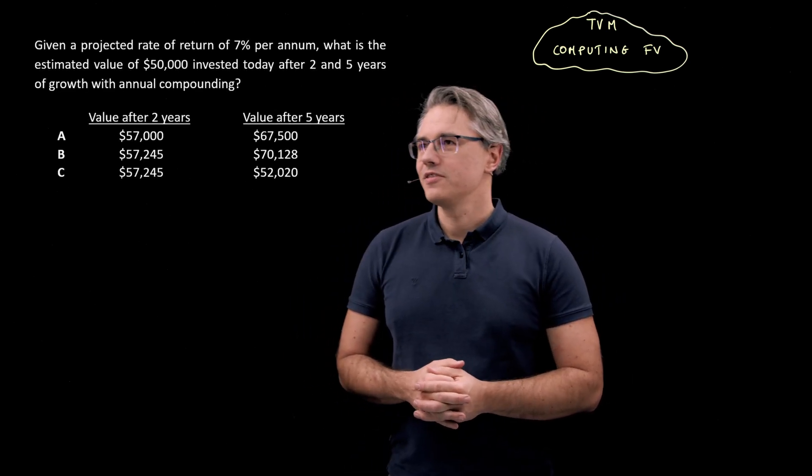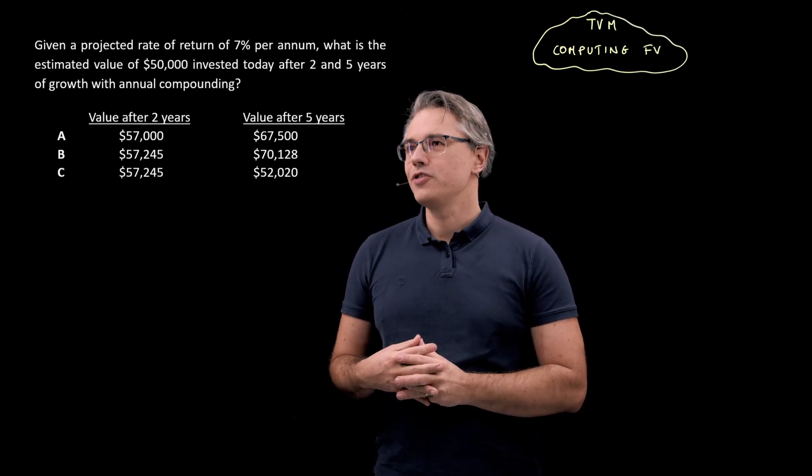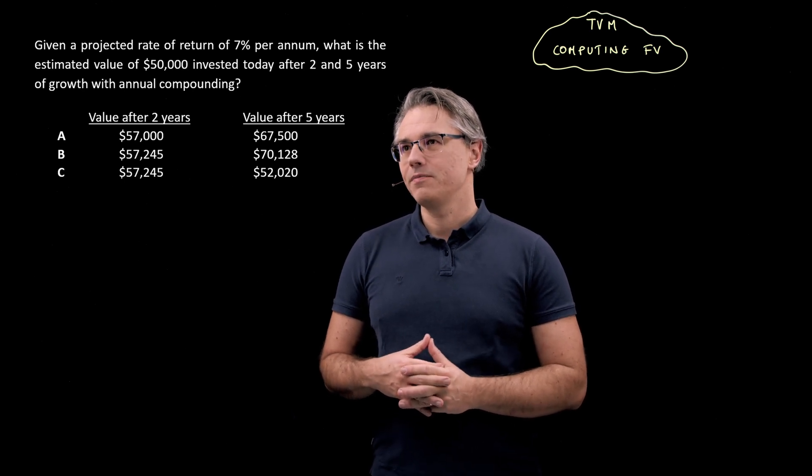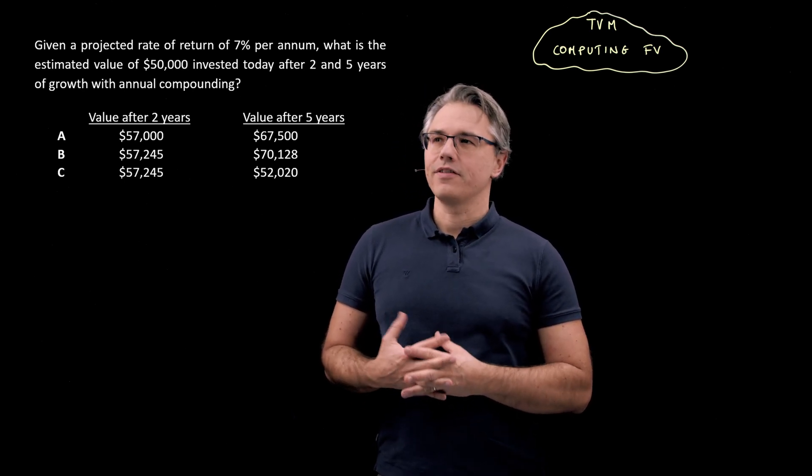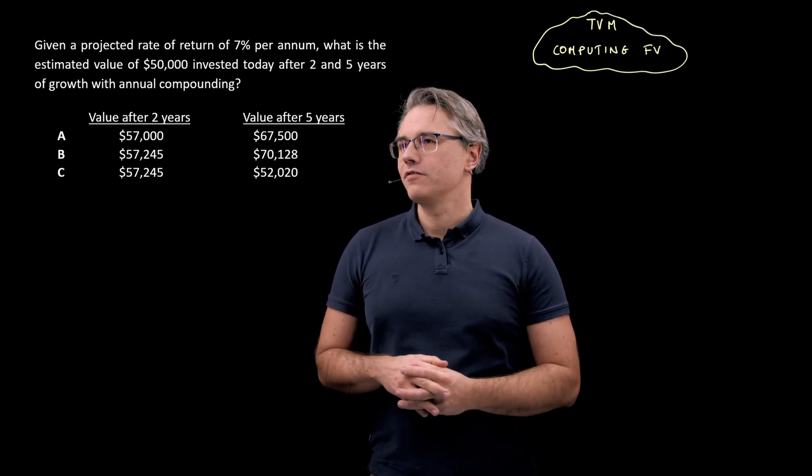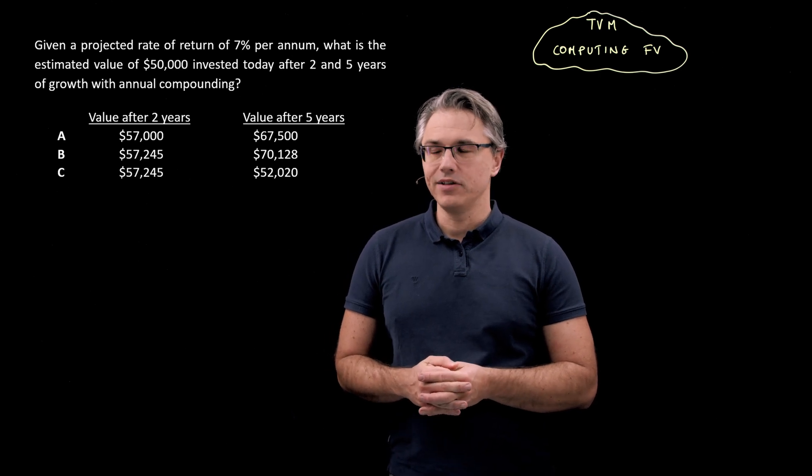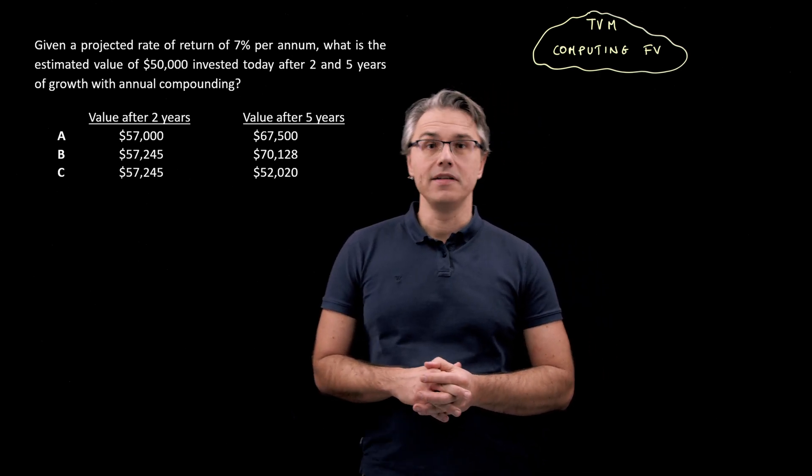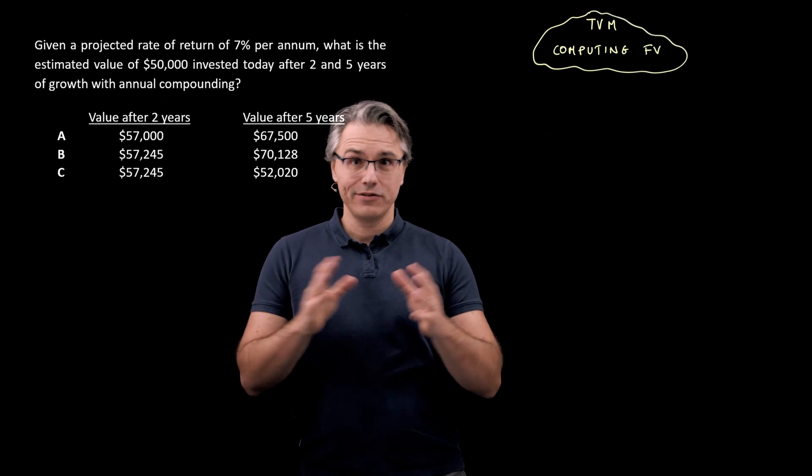So this is the question which I want us to have a go at. Given a projected rate of return of 7% per annum, what is the estimated value of $50,000 invested today after two and five years of growth with annual compounding? And we've got options A, B and C with two answers.